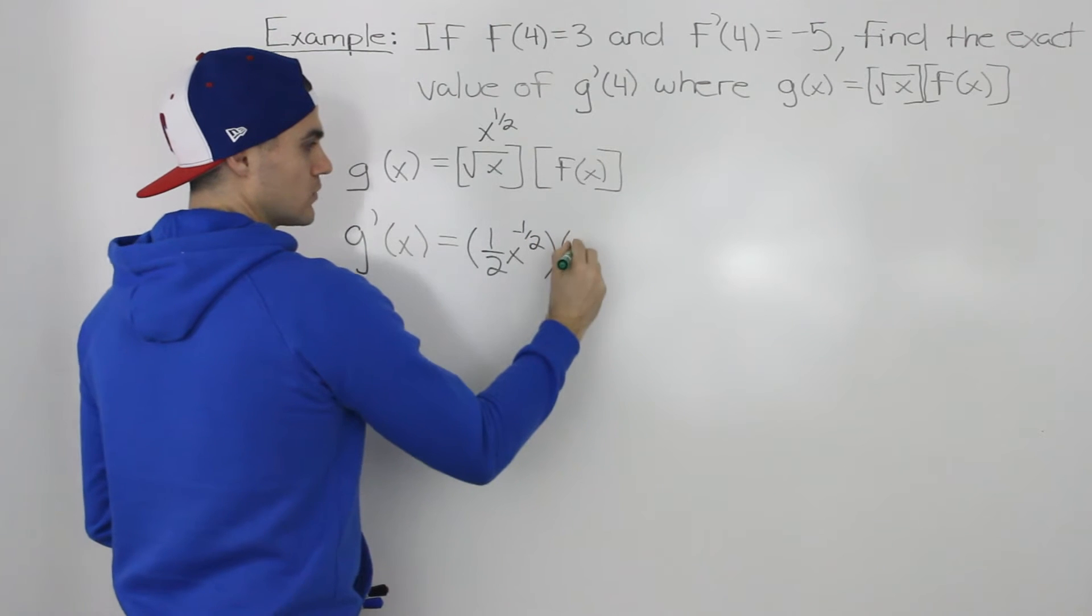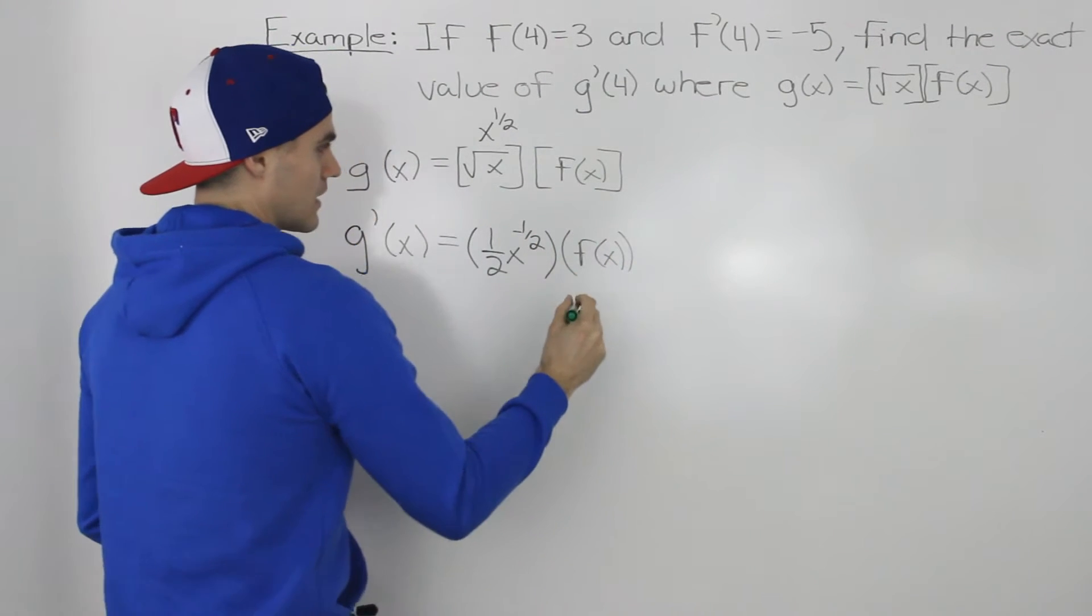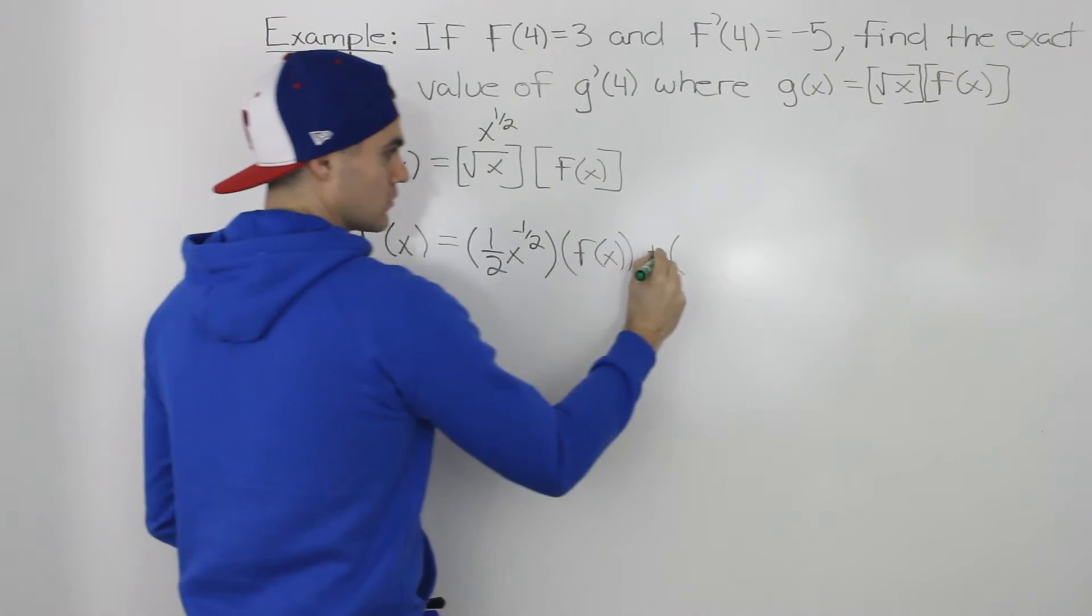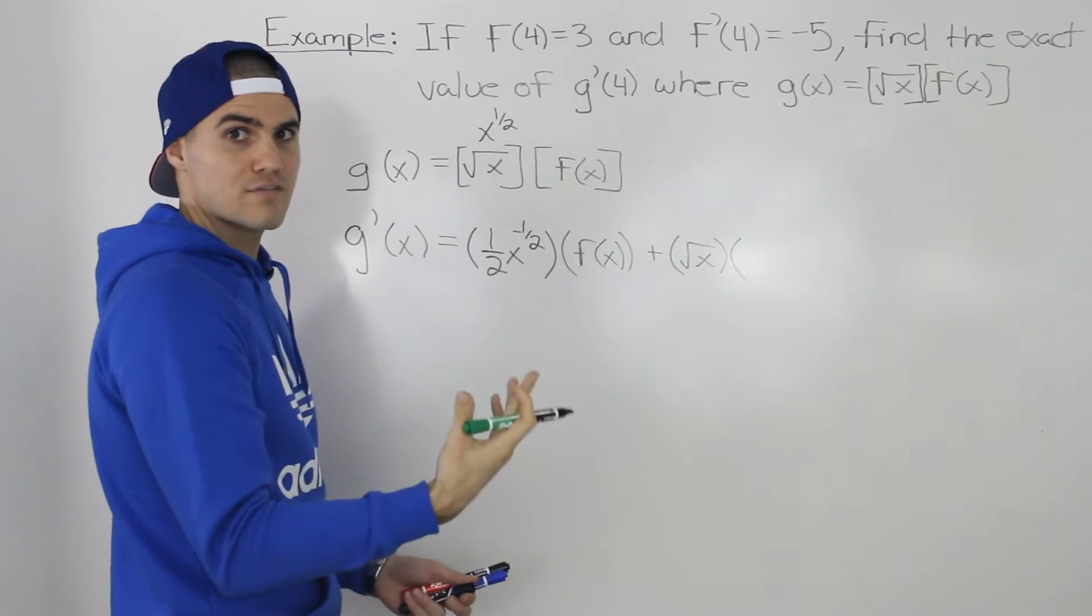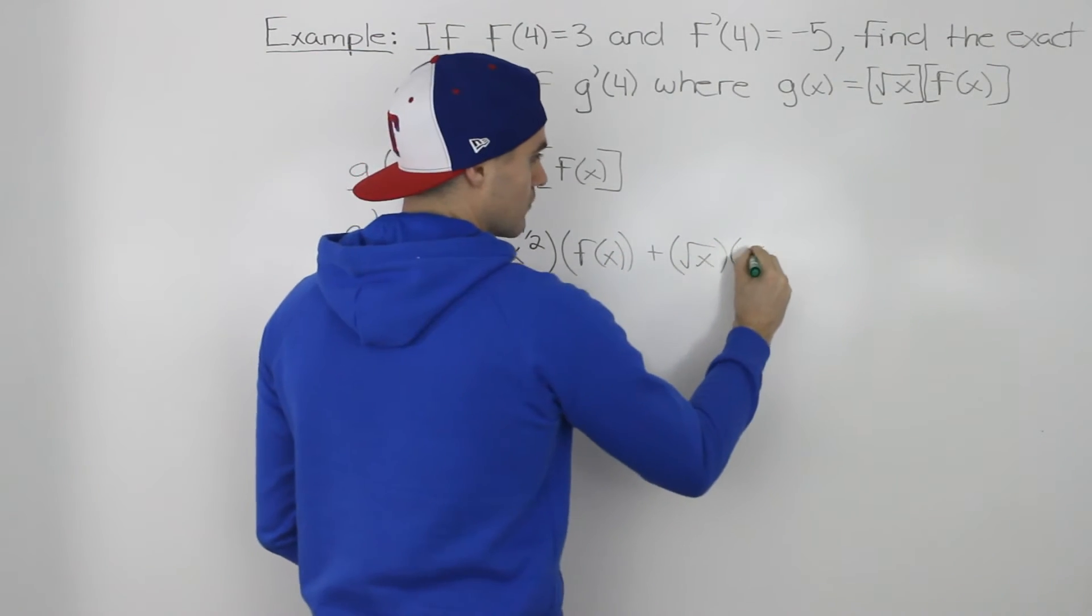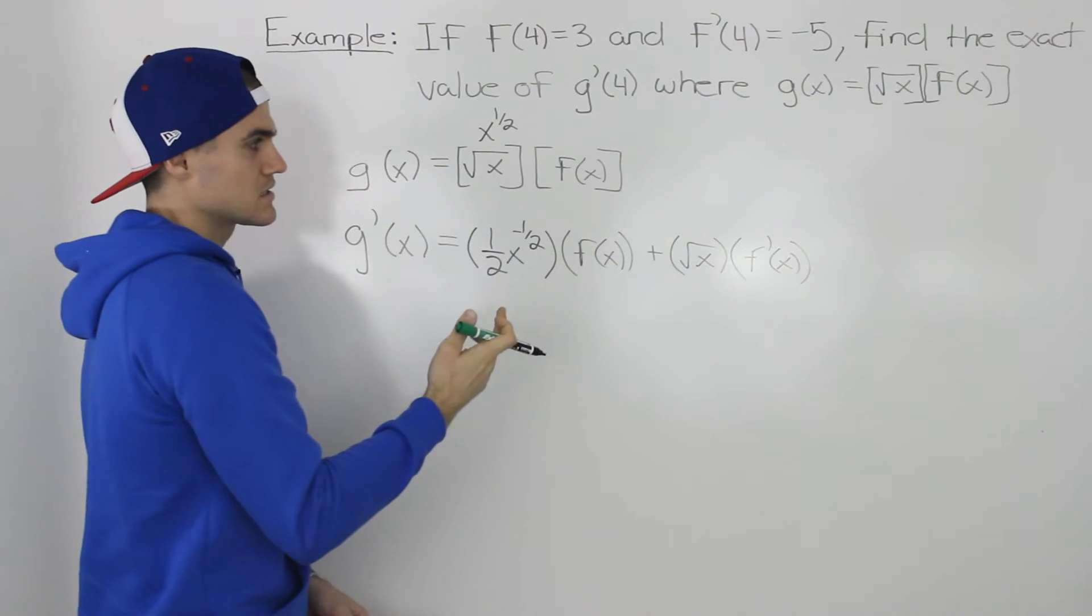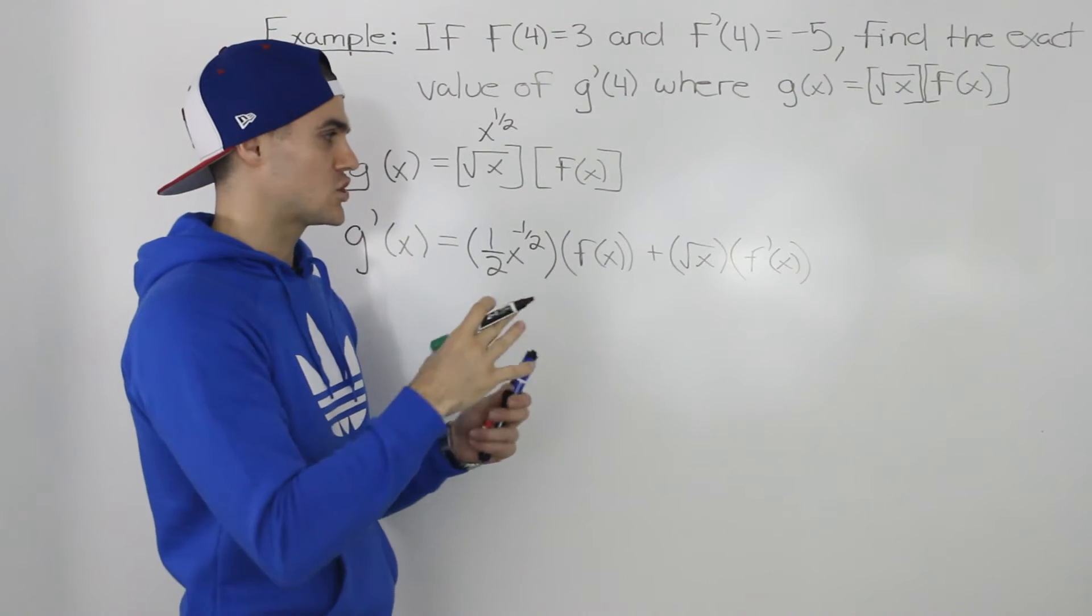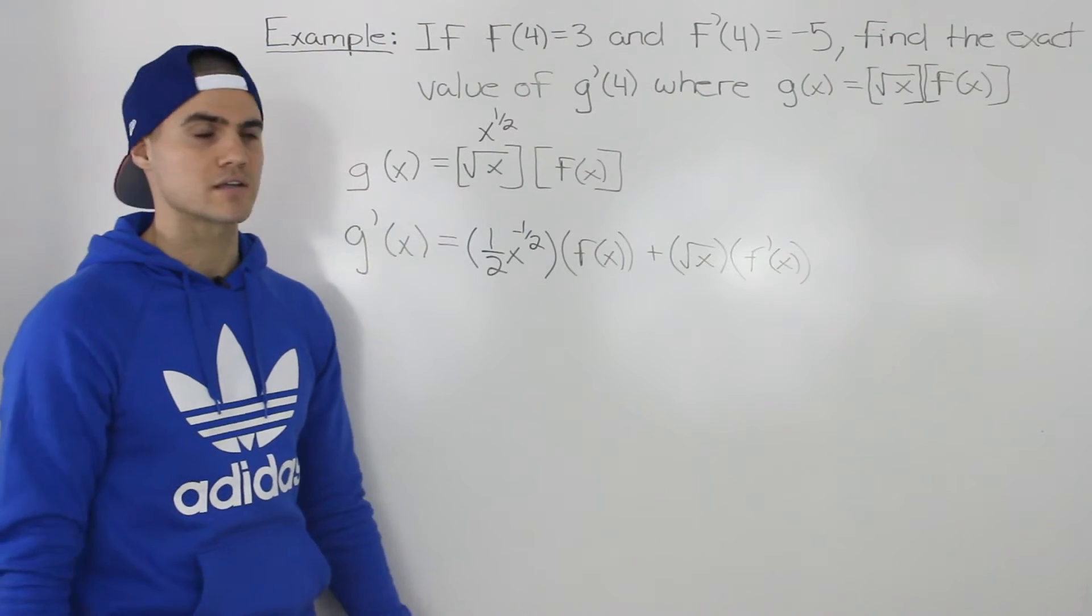The second function we keep the same, so let's keep f(x) as is, and then we add the first function, we keep it as is, so that's just the square root of x, and then the derivative of f(x) is just f'(x). We don't know what f(x) actually is, so when we're finding the derivative of it, we have to keep it in that general format, and the derivative of f(x) is just f'(x).